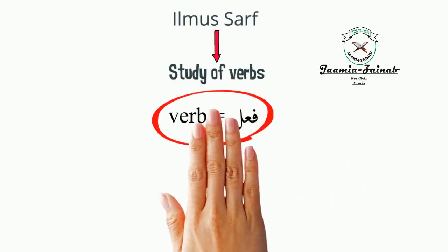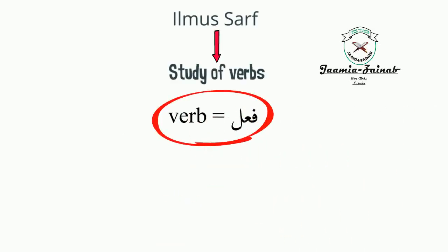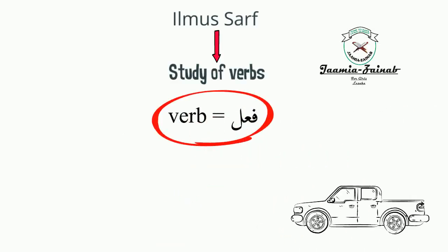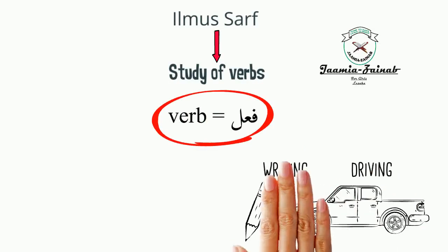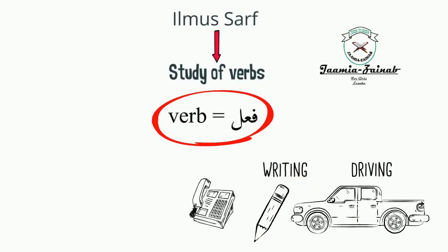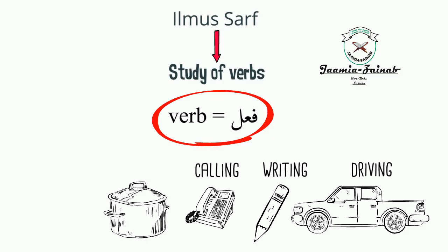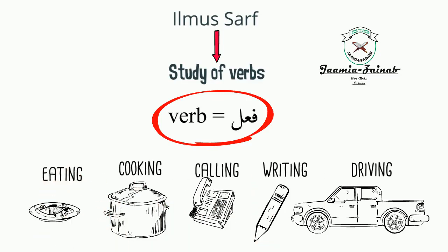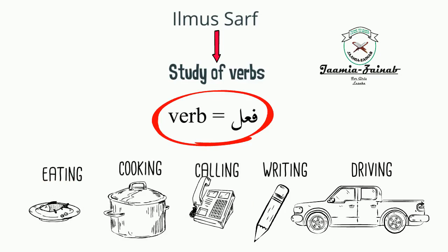Arabic grammar is divided into two parts: one is the study of the verb and one is the study of the noun. Ilmus serf is to do with the study of the verb. For example, eating, drinking, calling, writing — all these are examples of verbs.